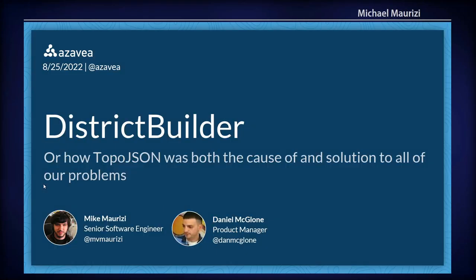My name is Michael Marisi. I'm a senior software developer and a technical lead for District Builder at Azavia. We're a software agency based in Philadelphia — a B Corporation. We try to focus a lot of our work on geospatial software with a social impact. I have with me Daniel McGlone, who's the product manager for District Builder. He's going to tell you a bit about it.